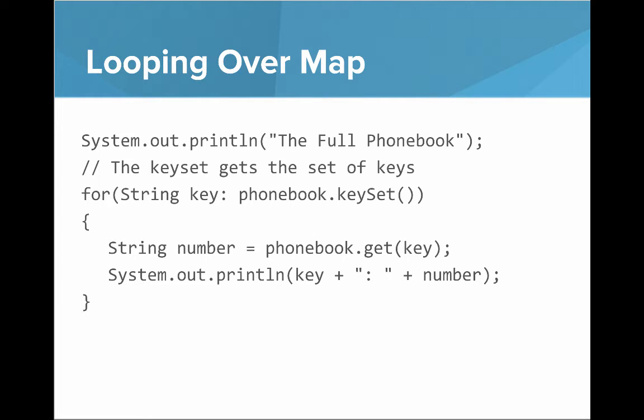If we want to loop over a map, what you do is we can use a for each loop looping through every string in the phonebook's key set. And so the key set is the set of keys in our phonebook. And so then within our loop, we can say string number equals phonebook dot get key that returns the value. And then we can print out the key and the value.